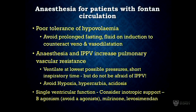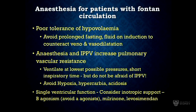When it comes to single ventricular function, if this patient has poor ventricular function to start with, we need to consider inotropic support. These patients do a lot better with beta-agonist type inotropes. We should avoid alpha-agonists because that will have an adverse effect on the pulmonary circulation. If they need more than mild support, drugs such as milrinone and levosimendan are also good choices in this population.